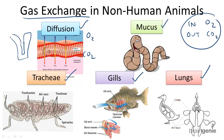Second, earthworms in the phylum Annelida absorb oxygen and excrete carbon dioxide through their skin. The skin is flooded with mucus, which helps with respiration.